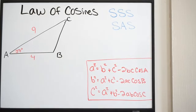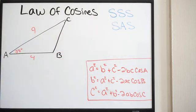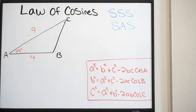Here is our second example dealing with the law of cosines. In the first example we talked about how to solve a triangle that was side-side-side using the law of cosines. Now in this video we're going to be talking about how to solve a triangle that is side-angle-side using the law of cosines.